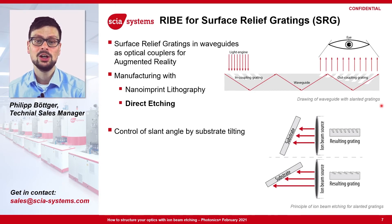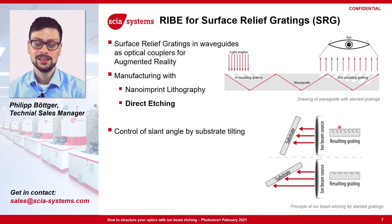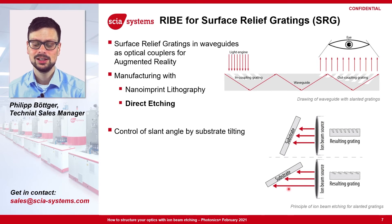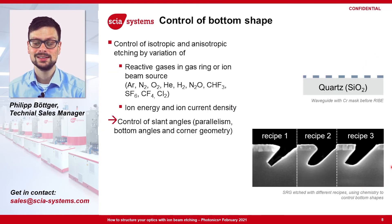Ion beam etching offers several advantages for the fabrication of such surface relief gratings. One important point is the separation between the plasma and the substrate, which means the substrate can be freely tilted within the ion beam. By using a specific angle of incidence you end up with a specific angle for your grating. But not only the angle of incidence is important to reach a good result — other process parameters are also very important.